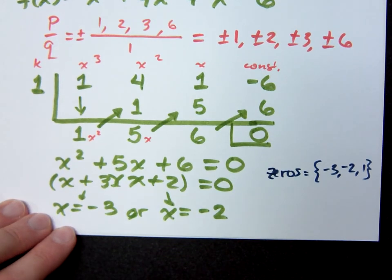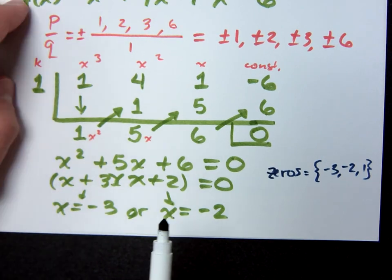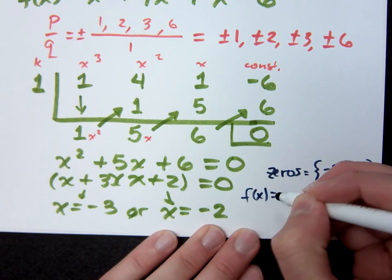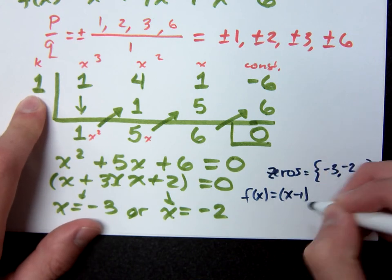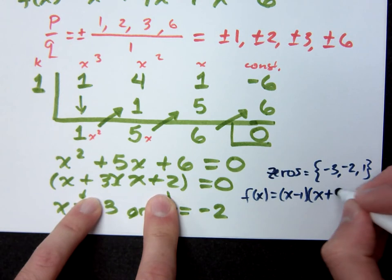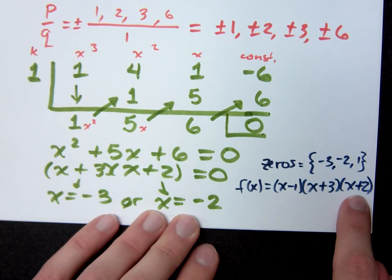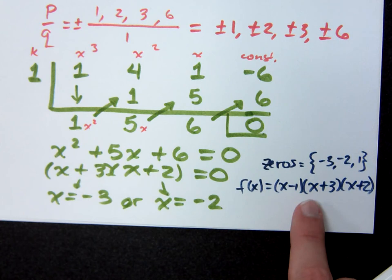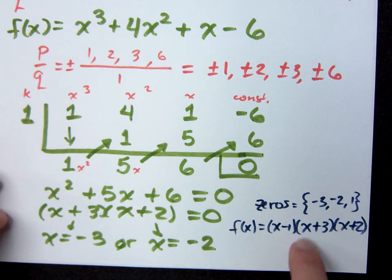Now, what if I went further and I said, what are the factors? If I said factor this guy, that means f of x is equal to x minus 1 times x plus 3 times x plus 2. Do you all agree that these are linear factors broken down all the way? How many zeros do I have? 3. How many did I expect to get? 3.